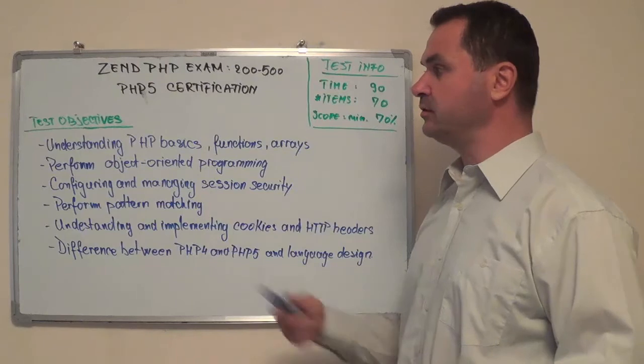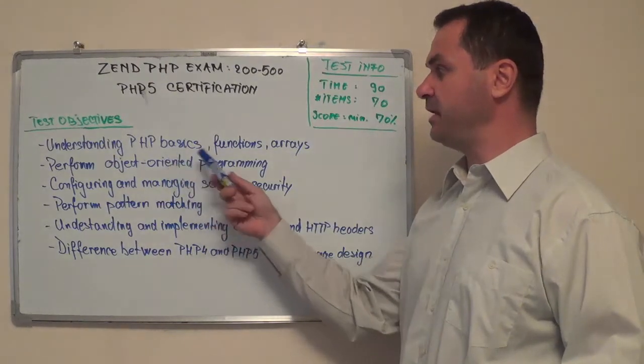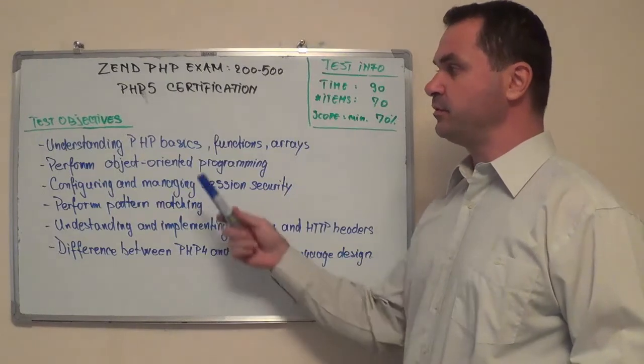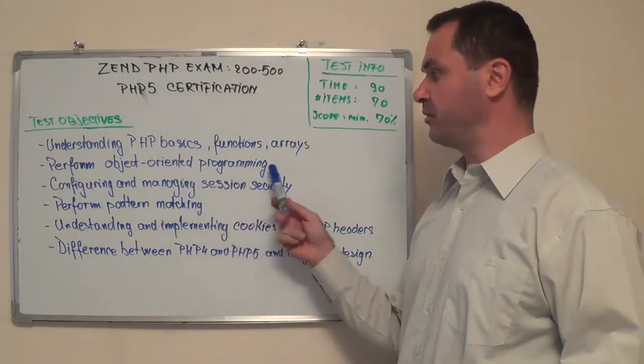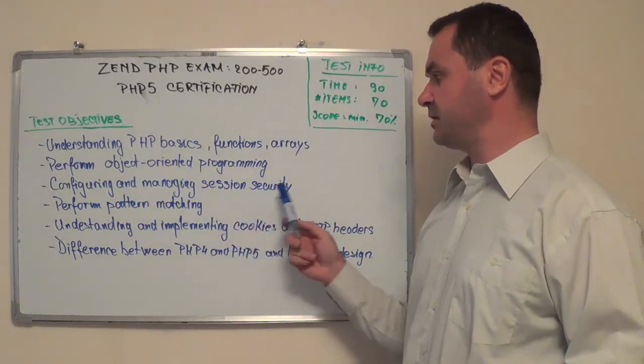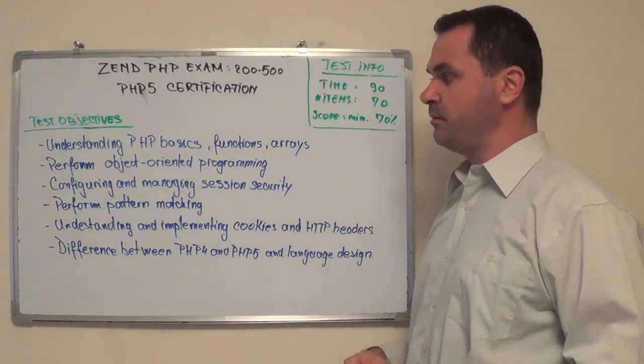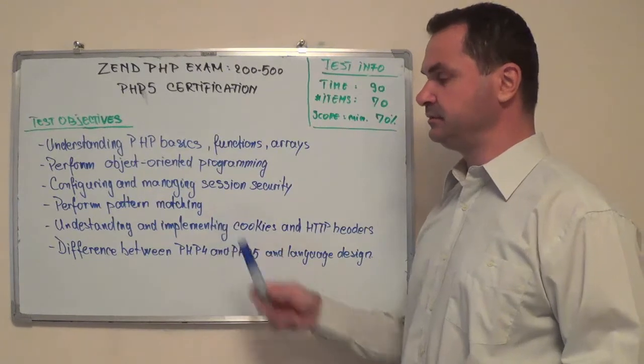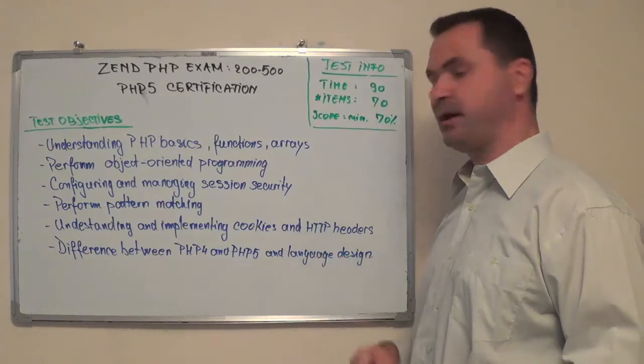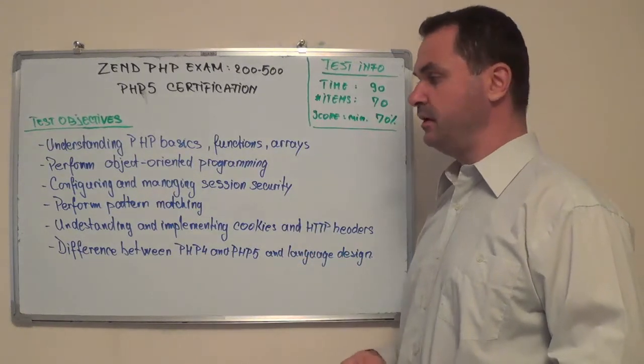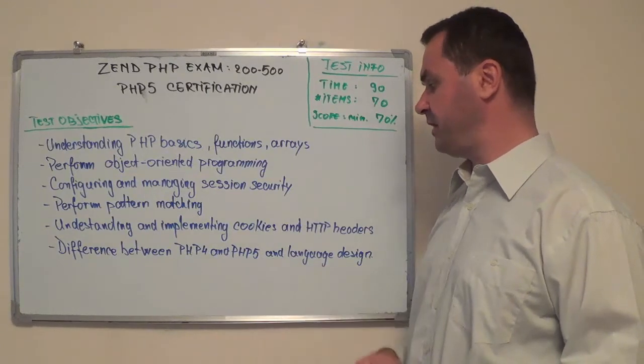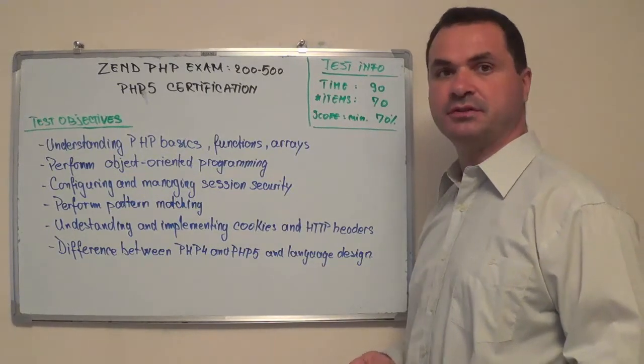First, you have to have a good understanding of PHP basics, functions and arrays. You have to perform object-oriented programming, configuring and managing session security, perform pattern matching, understanding and implementing cookies and HTTP headers, and finally, difference between PHP 4 and PHP 5 and language design.